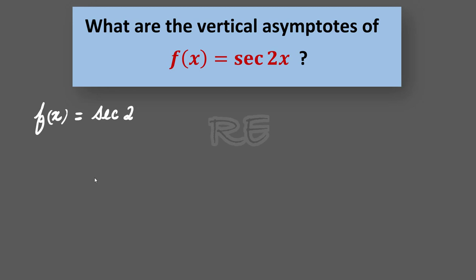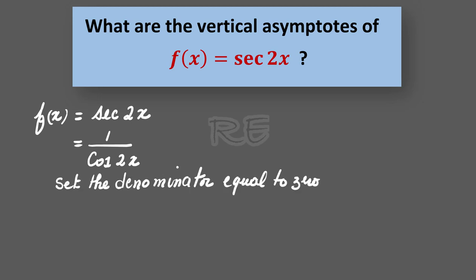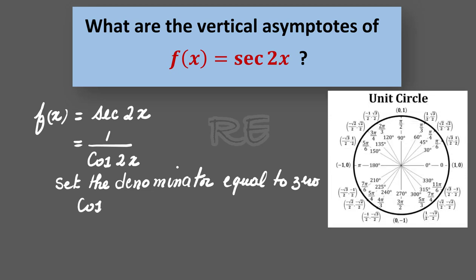If we understand secant 2x to be one over cosine 2x, then there will be vertical asymptotes when the denominator is equal to zero. Cosine 2x is equal to zero.